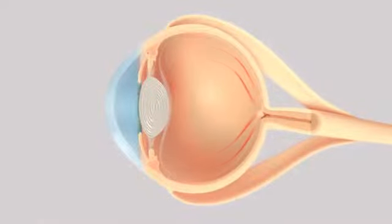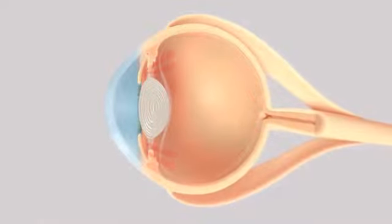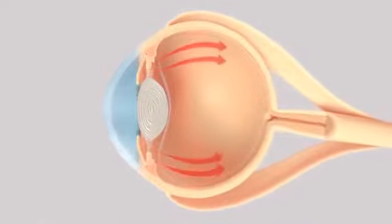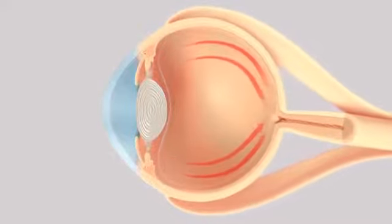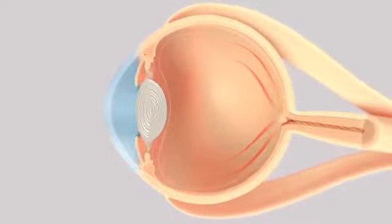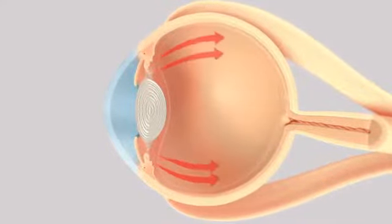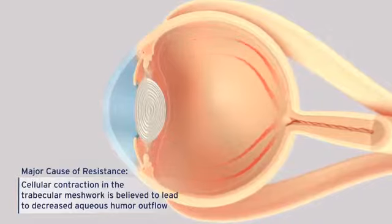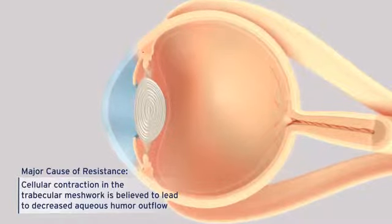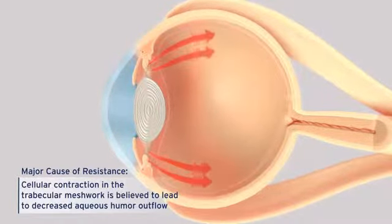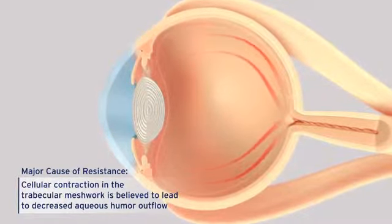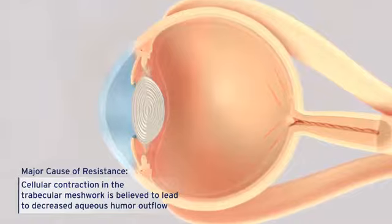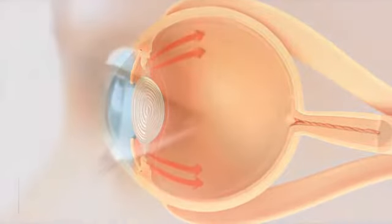It is widely understood that IOP becomes elevated when resistance to aqueous humor outflow increases. A major cause of this resistance is believed to be the contraction of cells within the trabecular meshwork, which restricts the amount of space available for aqueous humor outflow.